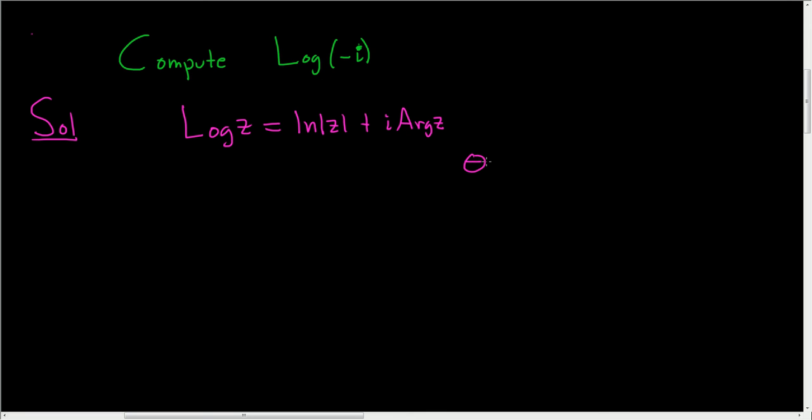The argument of z is the angle theta that lives in the interval negative pi to pi. That gives rise to this complex number.